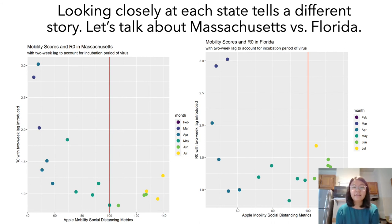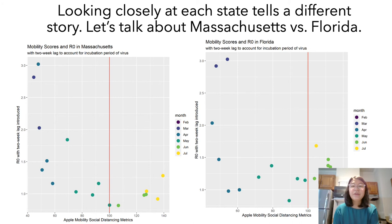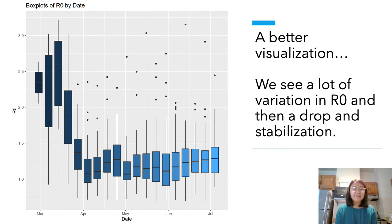Looking at each state tells a different story. In Massachusetts, R-naught started very high, but over the progression of the pandemic it was contained to hover around 1.2 to 1.5, though this still shows a growing epidemic. In Florida, similarly, R-naught started out very high and dropped as the nation went into lockdown. However, in June and July, R-naught started to tick back up again to around 1.5 to 1.7. This next visualization of R-naught shows that at the beginning of the pandemic it was quite high — around 2.5 to 3 — but then it started to drop and stabilize. I plotted R-naught and mobility scores on the same axis, transforming mobility scores to be logarithmic so they would fit, and the behavior of these graphs does show a relationship.